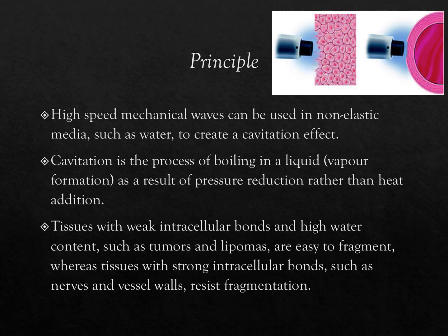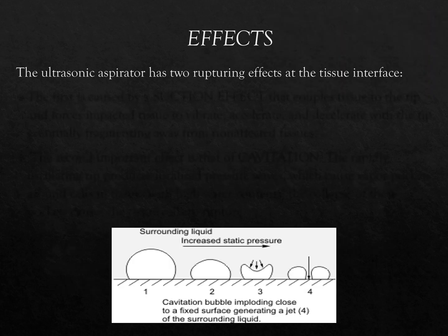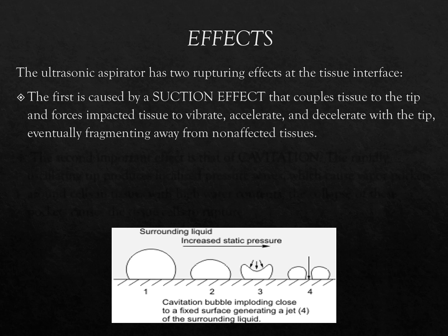Tissues with weak intracellular bonds and high water content, such as tumors and lipomas, are easy to fragment, whereas tissues with strong intracellular bonds, such as nerves and vessels, resist fragmentation.